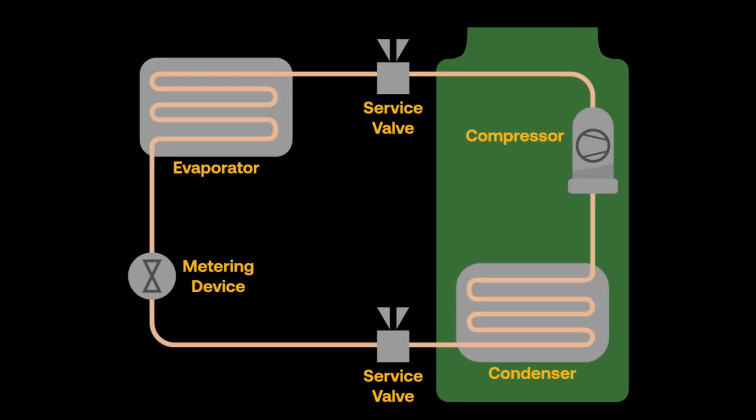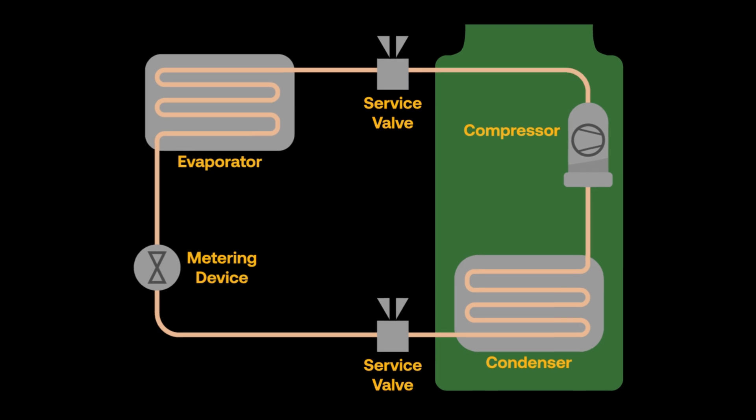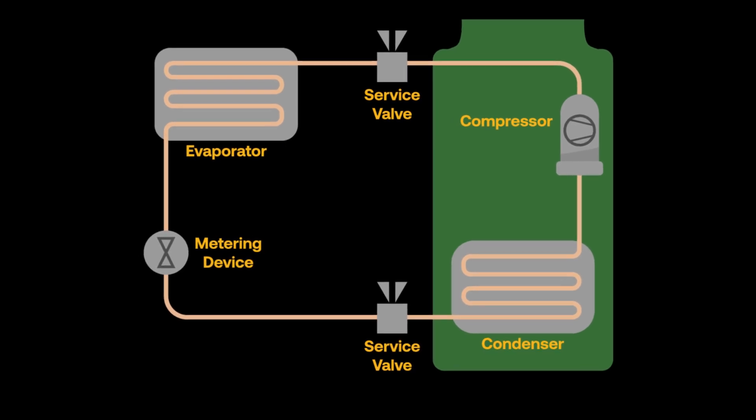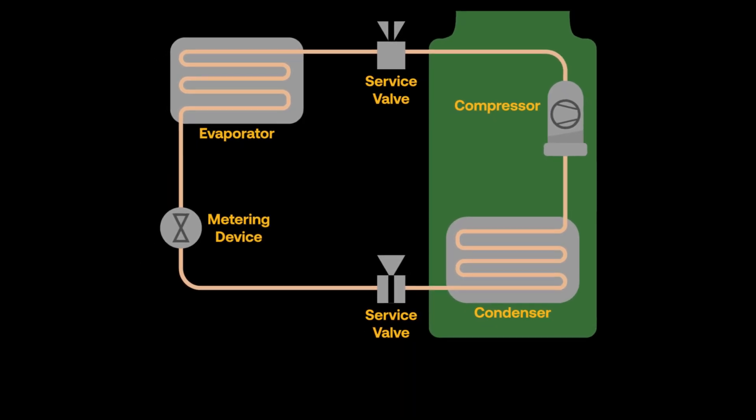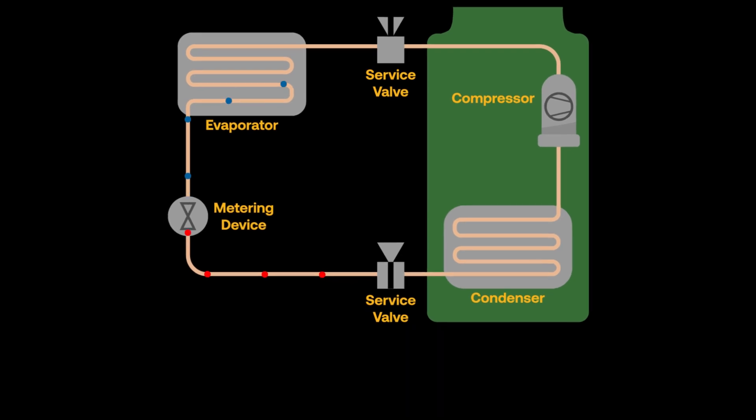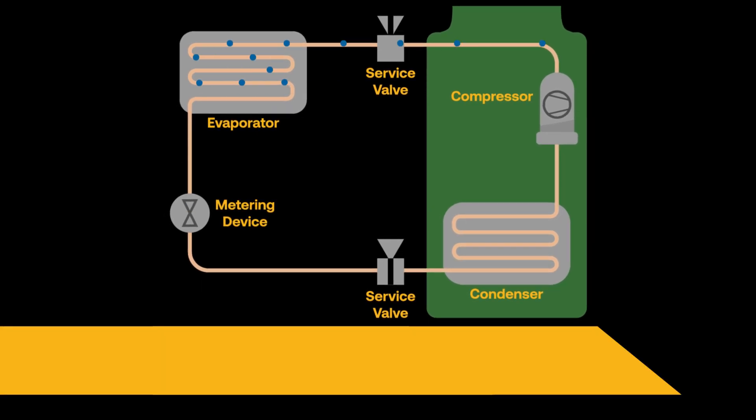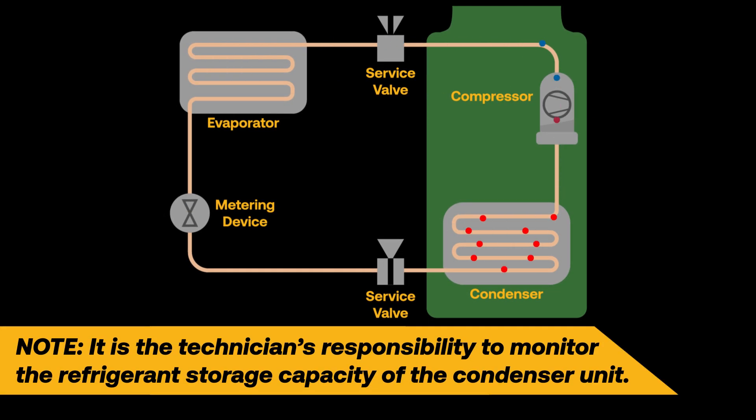In some instances, auxiliary recovery equipment may not be required at all. Modern VRF systems are equipped with a pump-down mode. This mode utilizes the system's own compressor to recover the refrigerant charge and store it in the condensing unit. This is particularly helpful for systems requiring repair to components beyond the condensing unit.